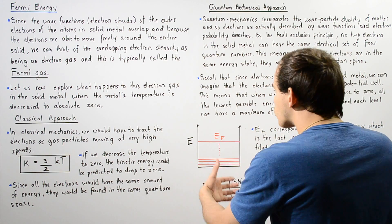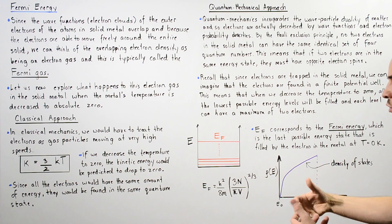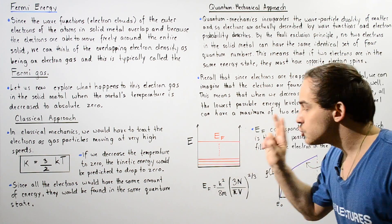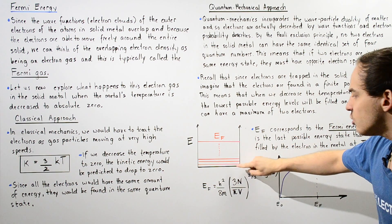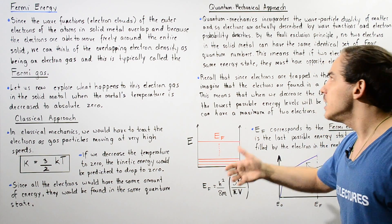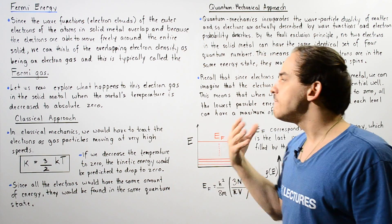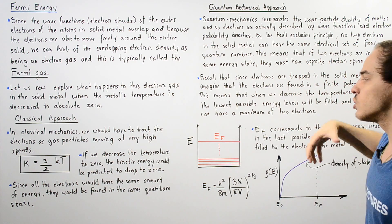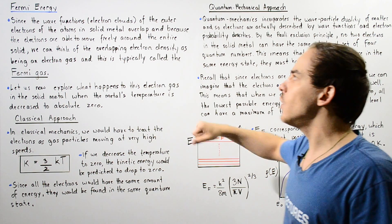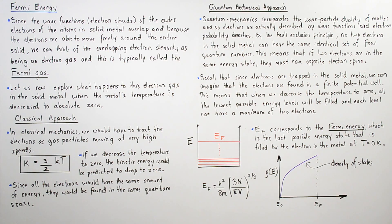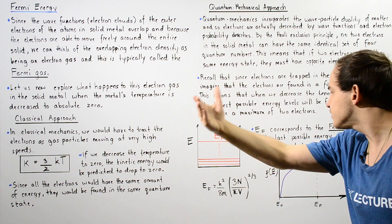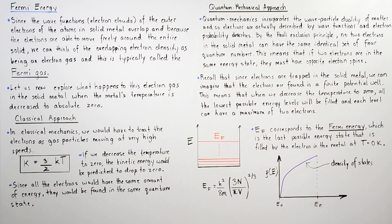If this diagram represents our rigid box — our finite potential well representing our solid metal — we see that a maximum of two electrons can go into each one of these energy levels, as per the Pauli exclusion principle. Once we fill all these quantum states with all our electrons, the final two electrons will go to the highest possible quantum state. This quantum state or energy level is known as the Fermi energy or the Fermi level, which corresponds to the last possible energy state filled by the last two electrons at a temperature of zero Kelvin.